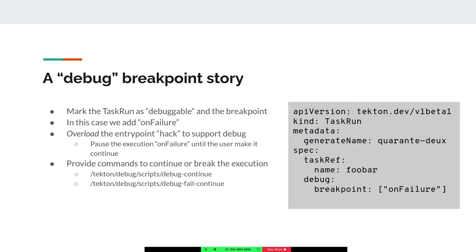When the user gets environment access, they can debug and do whatever they want, and then continue the step by marking it either as a success or a failure. We provide scripts to help do this — a debug continue script which marks the step as a success and breaks the breakpoint, and a debug fail continue script which marks the step as a failure, meaning the task would also be marked as a failure. Once the execution is complete, the user gets an idea of what exactly failed so they can go back to the task run and fix it.